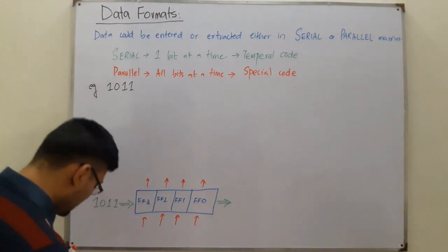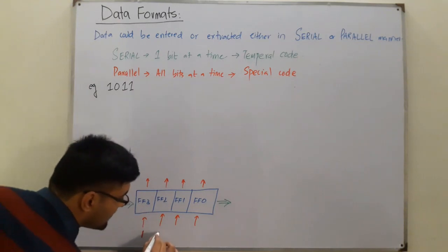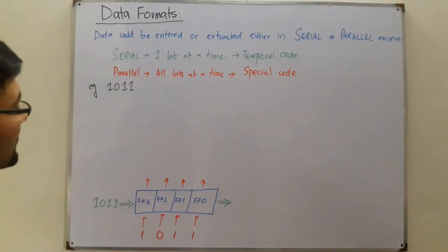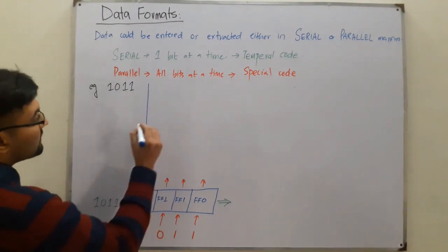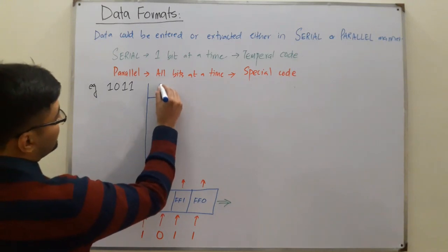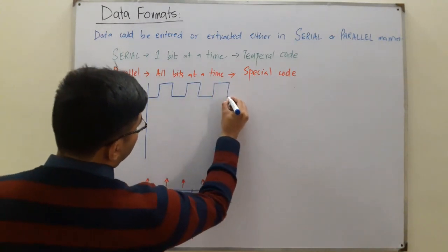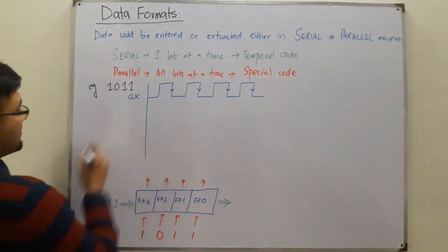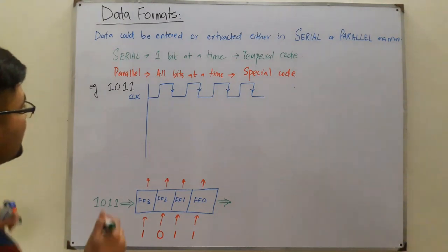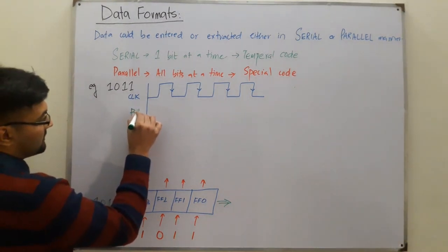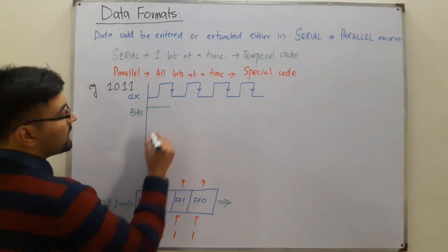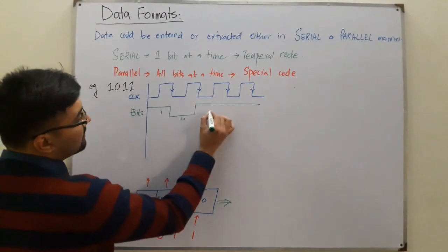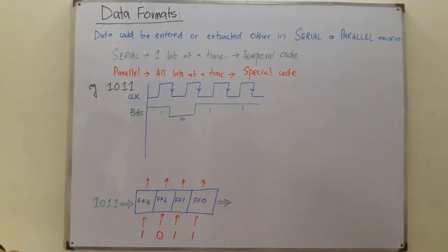In parallel mode, you directly apply one at flip-flop three, zero at flip-flop two, and one at both flip-flop one and flip-flop zero — all at the same time. For the timing diagram, this is the clock pulse with negative edges. In serial manner, for the first clock you provide one, then zero, then one, then one — this is the serial mode.